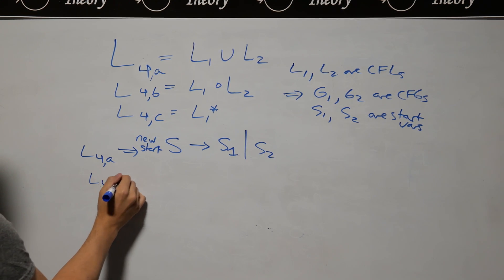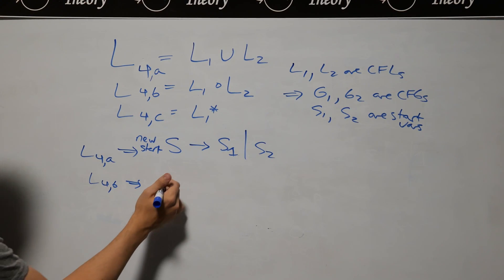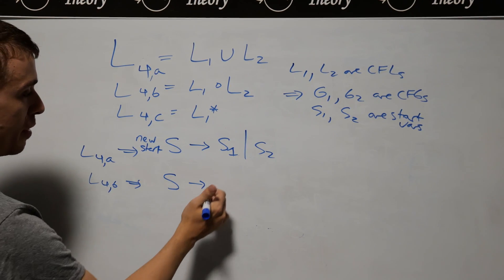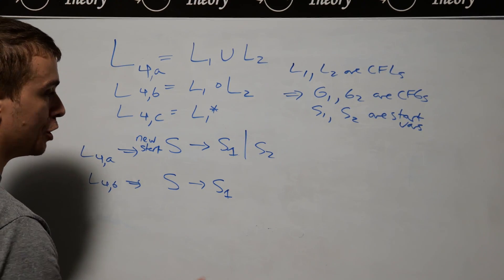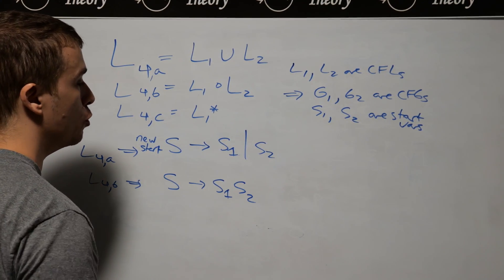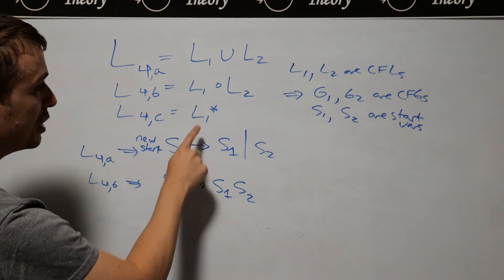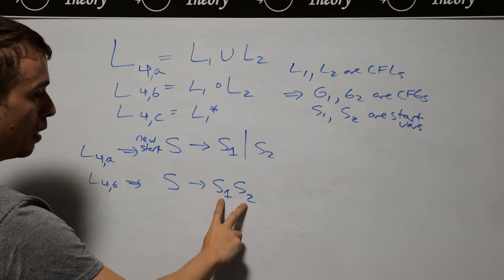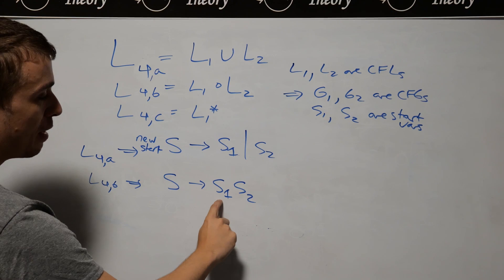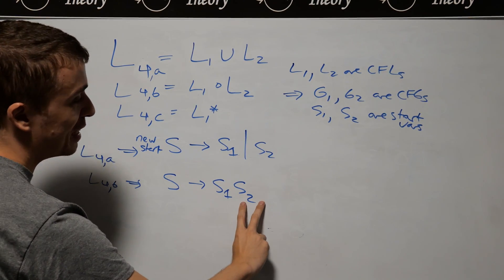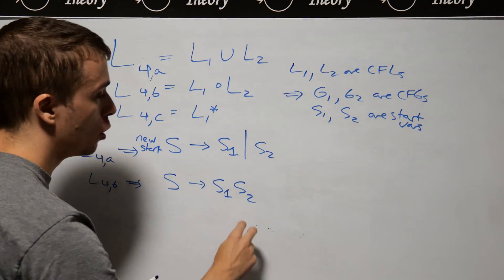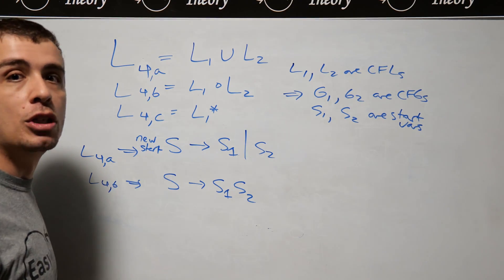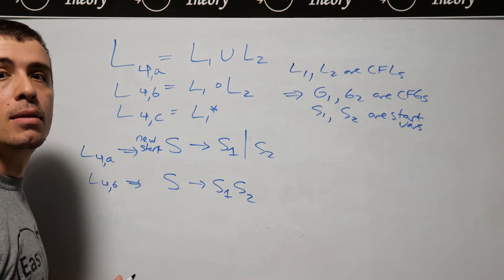For concatenation L1 concatenated with L2, we again use a new start variable S. But now instead of S going to S1 or S2, we have S go to S1 S2 together. Concatenation of two languages means: pick a string from L1 and a string from L2, then combine them. S1 will make some string and then S2 — being a variable — must also make a string of terminals, corresponding to generating a string in the original concatenated language.